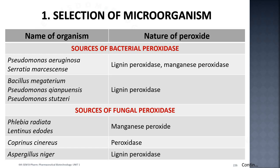One organism is selected based on criteria such as maximum yield, short duration, and minimal unwanted materials. Examples of microorganisms used for peroxidase production include bacteria like Pseudomonas fluorescens and Bacillus megaterium, and fungi like Phlebia radiata and Aspergillus niger.